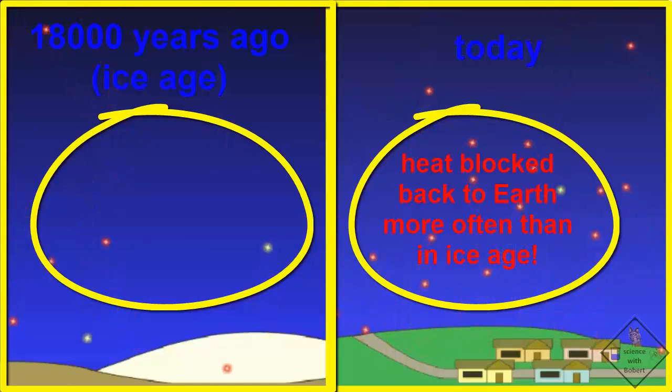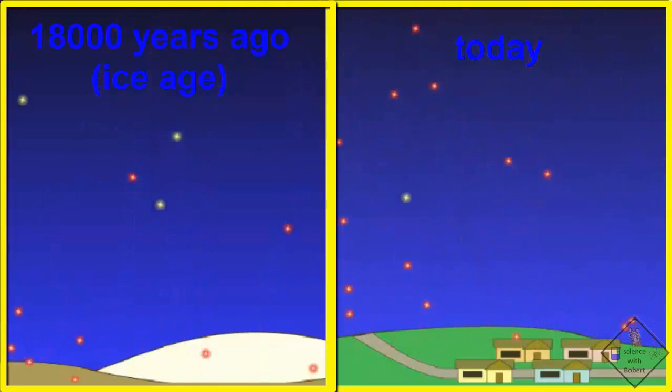If we look at the animation set for today, we can see that the pinball effect on heat by carbon dioxide occurs much more often due to the higher concentration of carbon dioxide. In fact, today, scientists believe each photon of heat released from the Earth's surface is blocked at least once before finally escaping into space. That definitely was not the case 18,000 years ago.